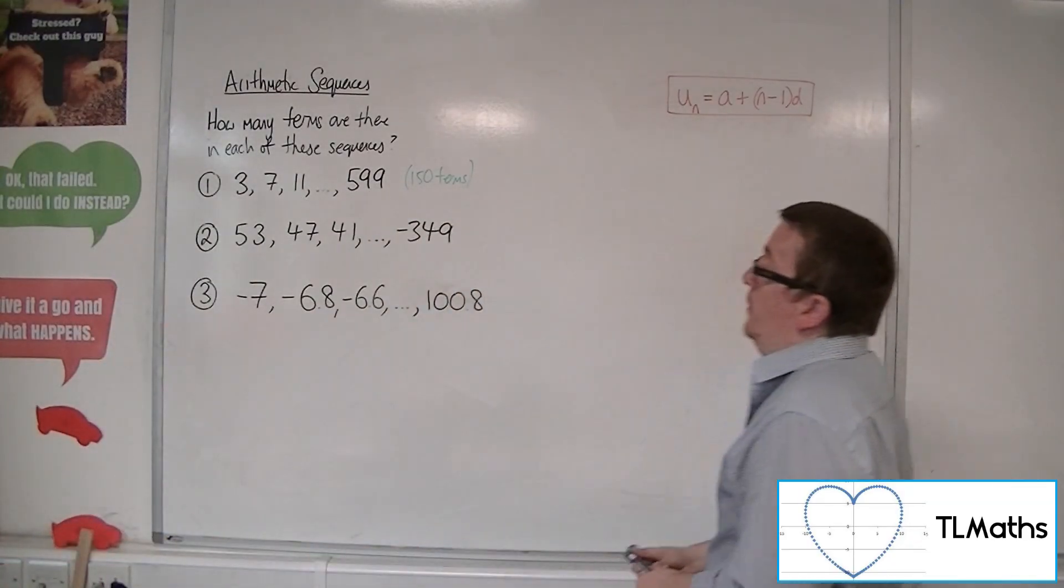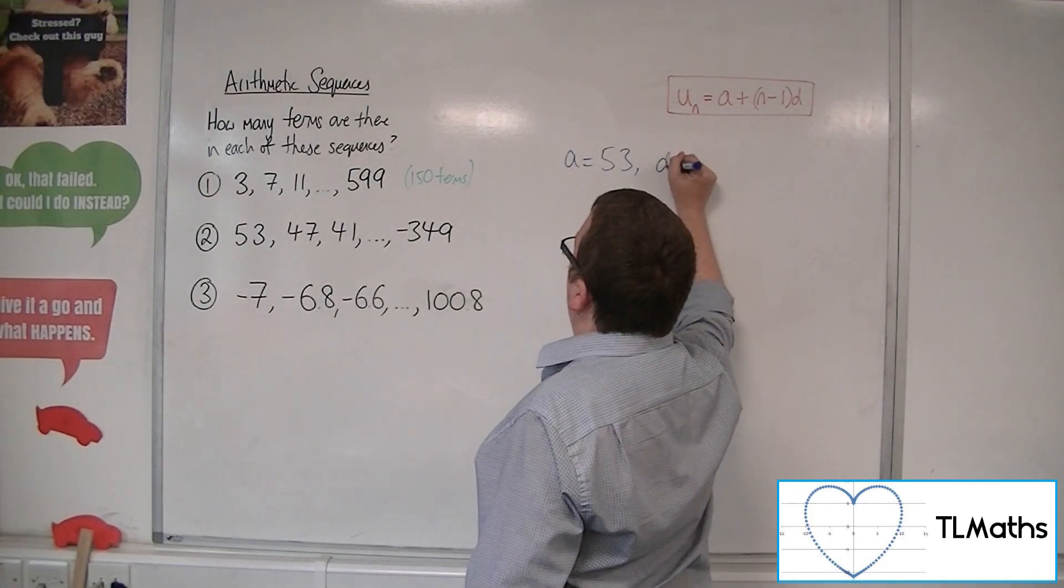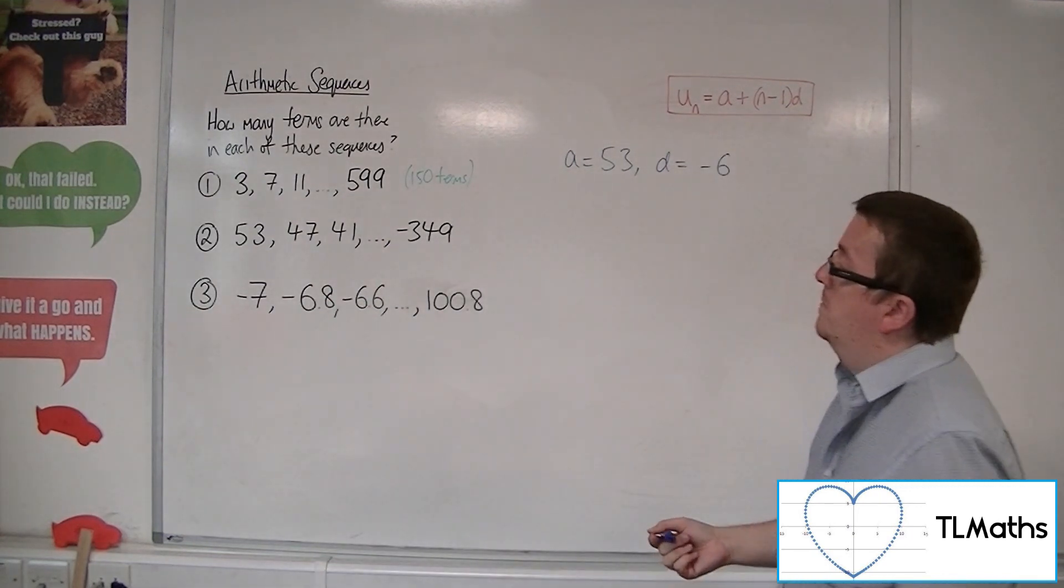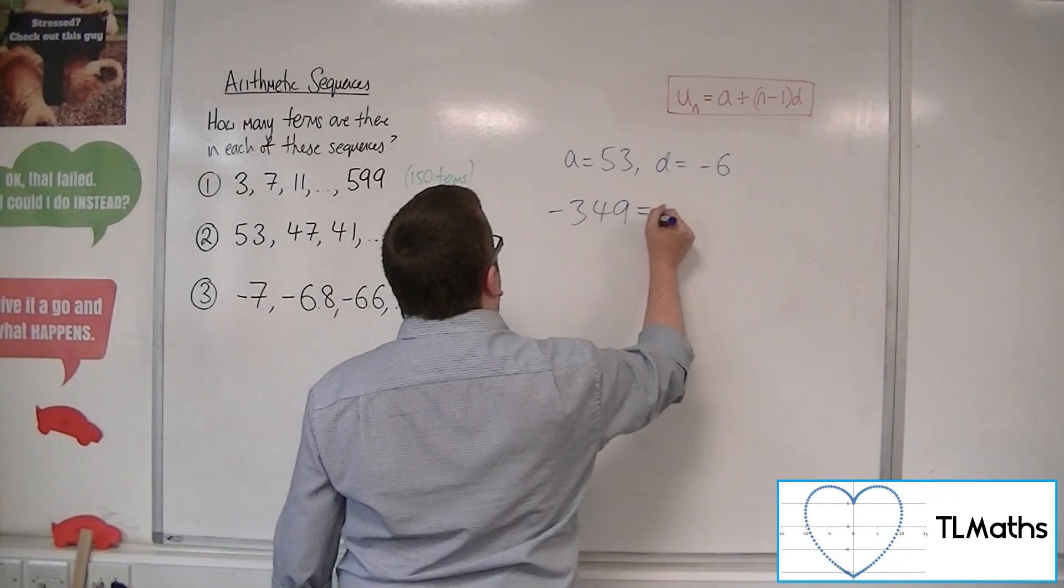So for number 2, we have that the first term is 53. And the common difference is, well in this case, we're going down in 6s each time. The minus 349 is the term I want to find.